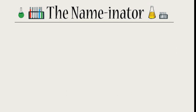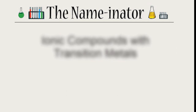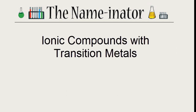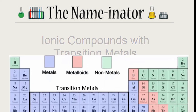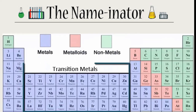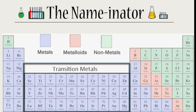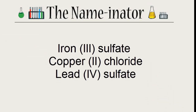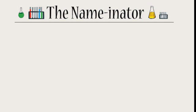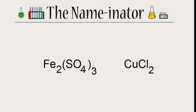Sometimes for ionic compounds, we have a transition metal attached to the nonmetal. This is important to recognize because transition metals can have different charges. So when we write the names, they'll often look like iron(3) sulfate, copper(2) chloride, or lead(4) sulfate. The formulas will look like Fe2(SO4)3 or CuCl2.